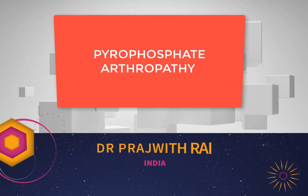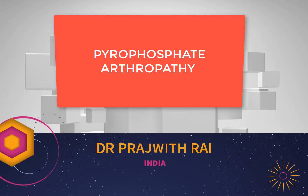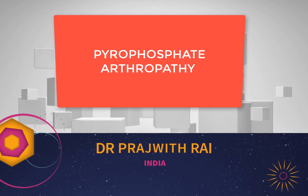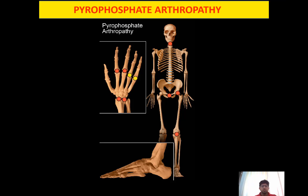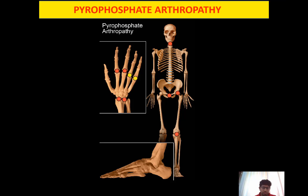Pyrophosphate arthropathy is an arthropathy that occurs due to the deposition of calcium pyrophosphate. There are three main terms used here. The first is chondrocalcinosis, in which calcium pyrophosphate deposition happens in the cartilage — this may not have arthropathy as such. The second condition caused by calcium pyrophosphate deposition is pyrophosphate arthropathy.